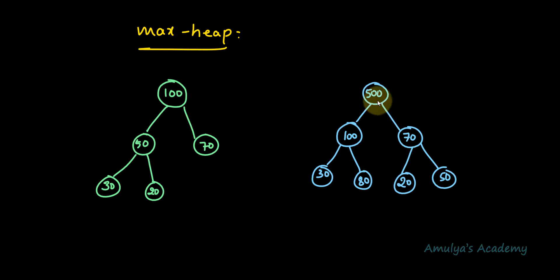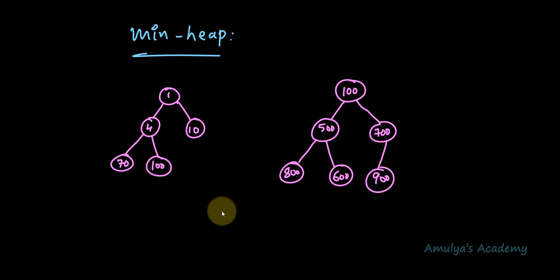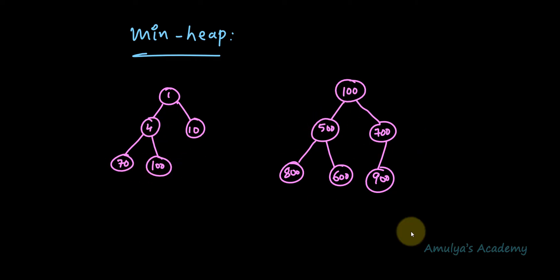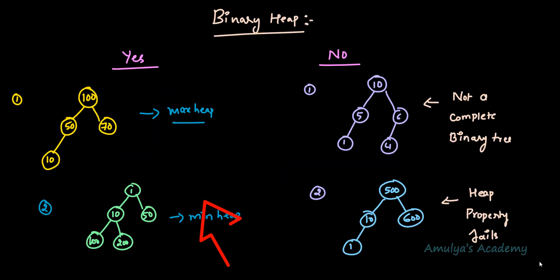Here is another max heap example with values 500, 100, 70, 30, 80, 20, and 50. Now these are examples of min binary heaps — here you can see the root node's key is the smallest among all the nodes' keys, such as 4, and the values 10, 70, and 100 appear at deeper levels. I hope you are now clear with the binary heap concept, max binary heap, and min binary heap, and can identify from examples which are valid heaps and which are not.